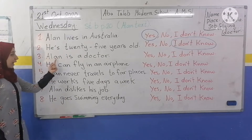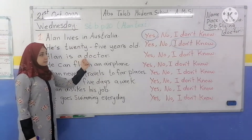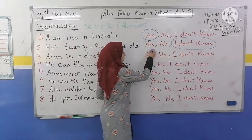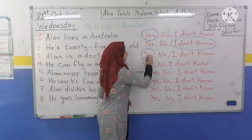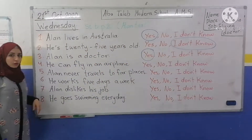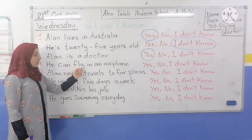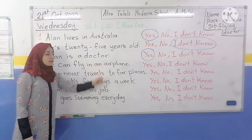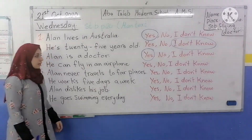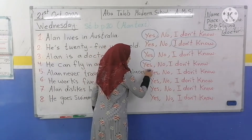Number 3: Alan is a doctor. Yes — Alan is a flying doctor. Number 4: He can fly in an airplane. Yes, he can fly in an airplane.